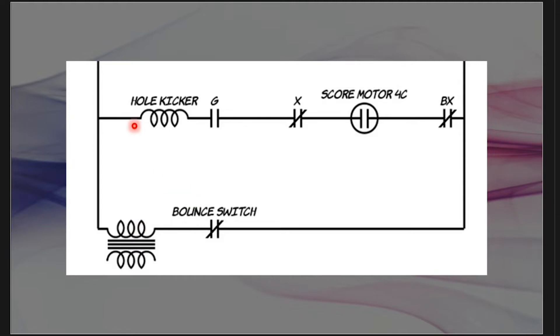What's going to happen on the hole kicker is the G relay. There's a switch that's normally open on the X relay. There's one that's normally closed, score motor 4C switch is normally open, and then the B of X end of game is normally closed. If this hole kicker is going to fire, this G needs to close and the score motor needs to get called and spin. When it spins, this is going to close at one point. Once I have that, I can have a complete circuit here.